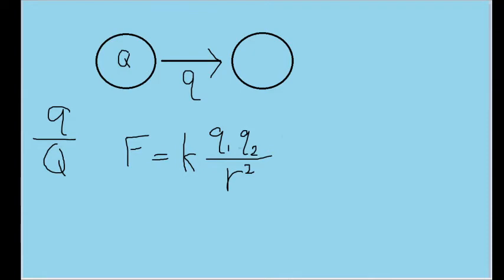And of course, q sub 1 and q sub 2 represent the charges of the two relevant particles. Or, in this case, one of our charges is equal to big Q minus the small q that is being transferred.